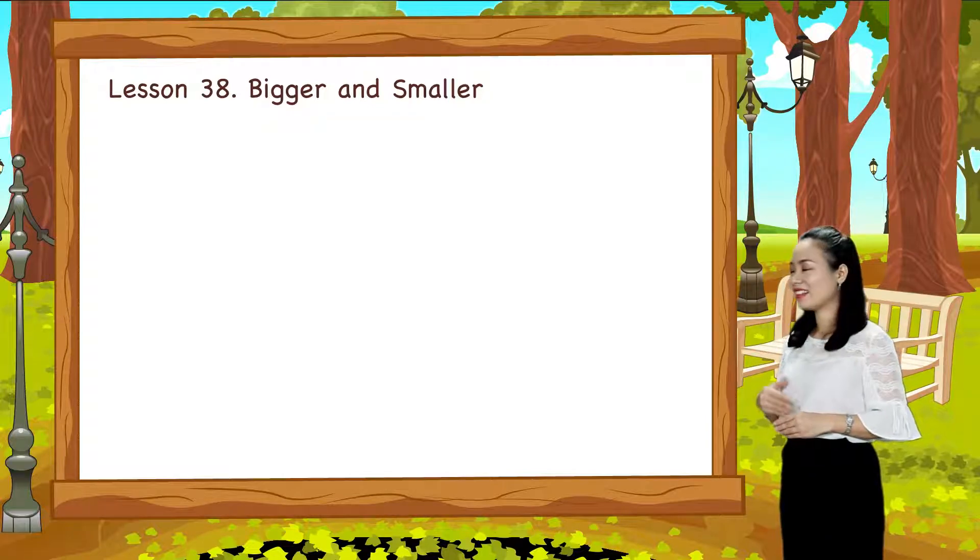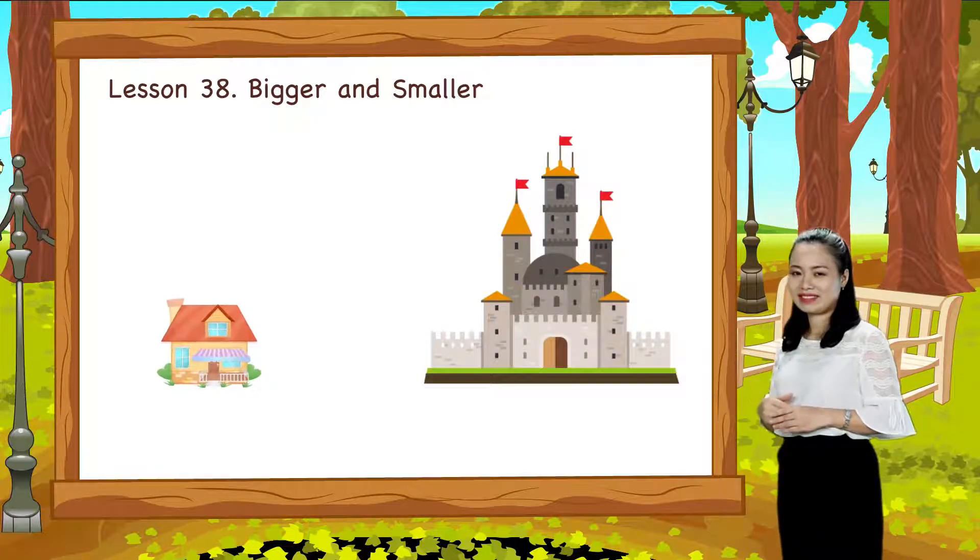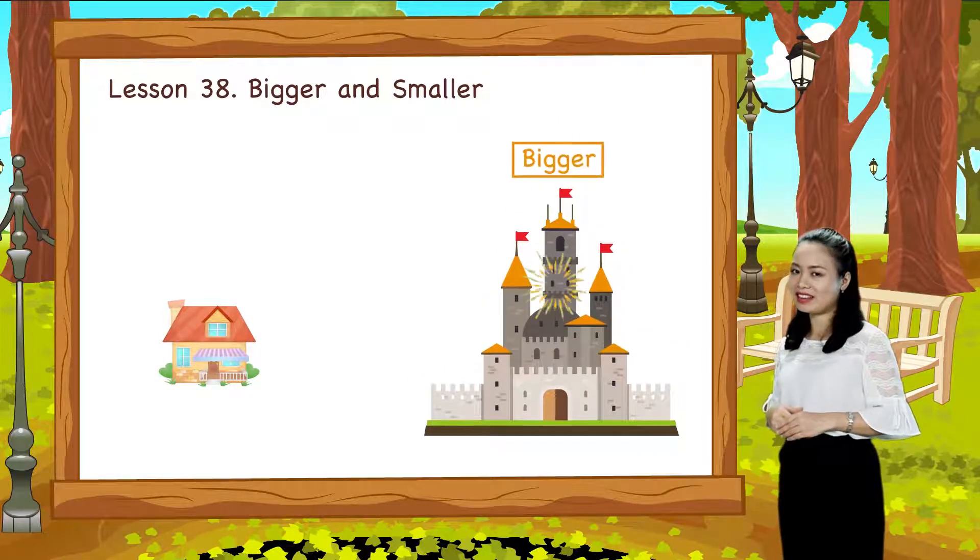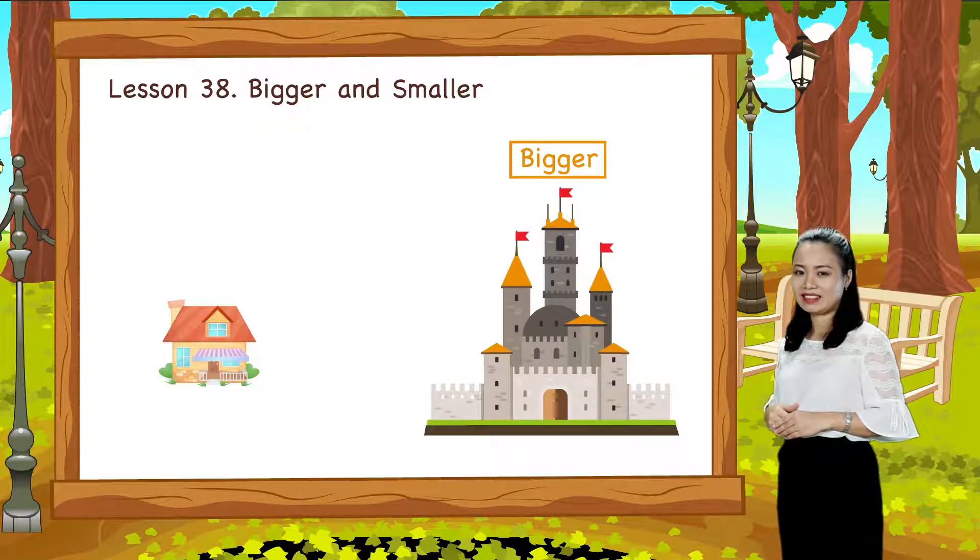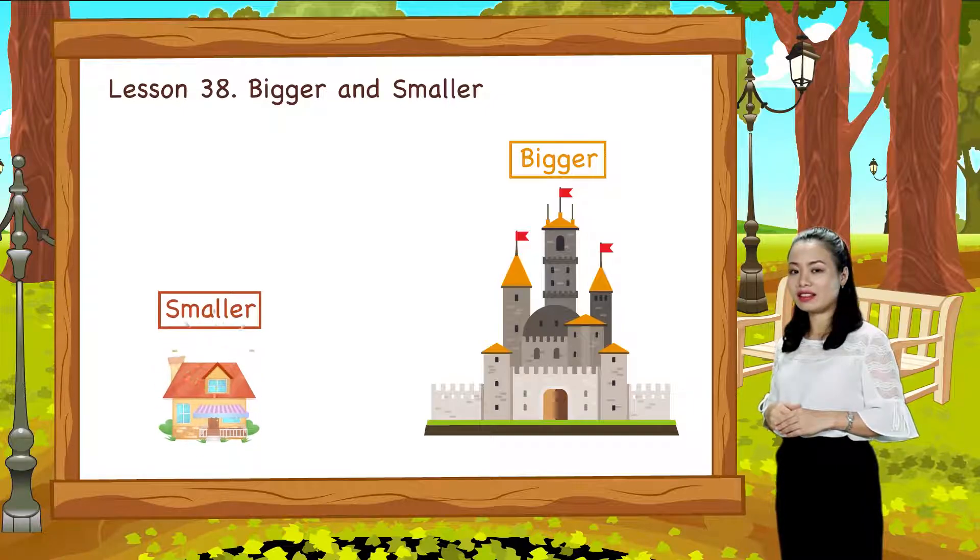Look, this is a castle. This is a house. We say the castle is bigger than the house or the house is smaller than the castle.